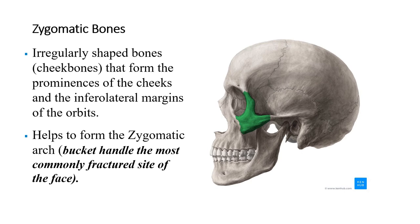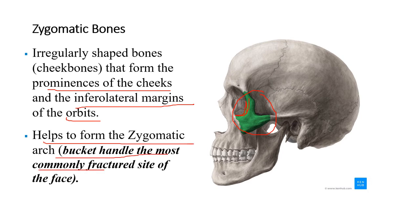The zygomatic bones are the cheek bones — irregularly shaped bones that form the prominences of the cheeks and the inferior lateral margins of the orbits. They help to form the orbit of the eye and the zygomatic arch, otherwise known as the bucket handle. The most commonly fractured site of the face is right there. The temporal process of the zygomatic bone meets the zygomatic process of the temporal bone; together they form the zygomatic arch, and where they fuse it's almost like it's scored and ready to be broken.